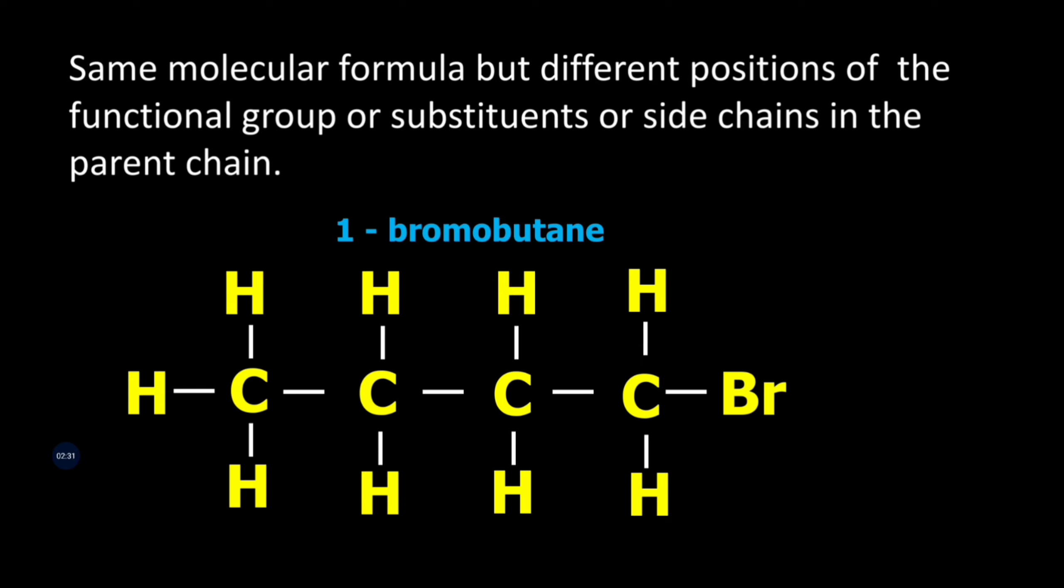But the substituent can be moved to another carbon. In this case, we have created a new position for the Br molecule. We have to number the carbon atoms from the end nearest the substituent. So this molecule becomes 2-bromobutane.